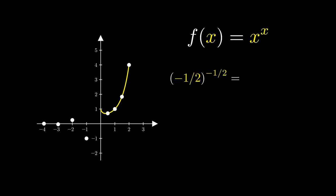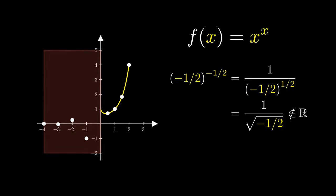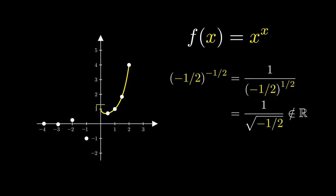So we are able to compute x to the x when x is a negative integer. But what happens if it's a negative fraction? This gives us 1 divided by negative half to the half. This simplifies to 1 divided by the square root of a negative number, which is not a real number. In other words, we don't actually know if we could plot a point on the left side of the graph. And furthermore, what happens if we try to plug in the value 0? Pause the video if you'd like to try this out for yourself.